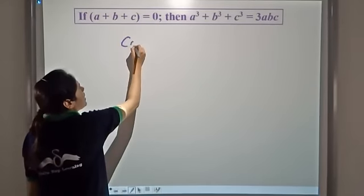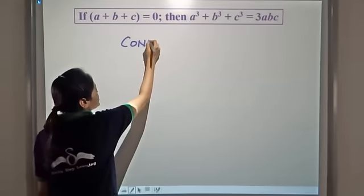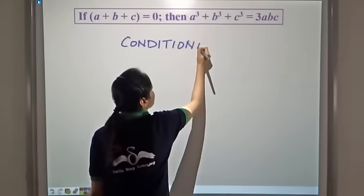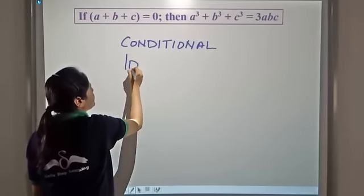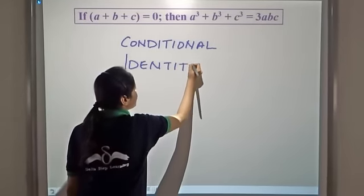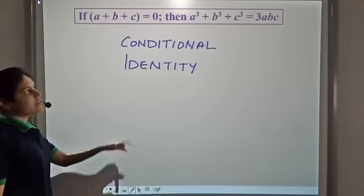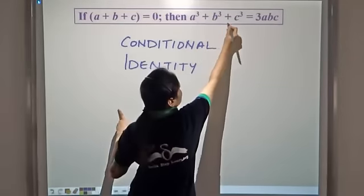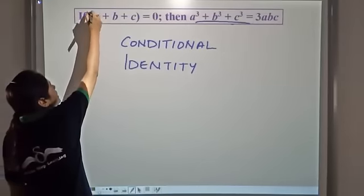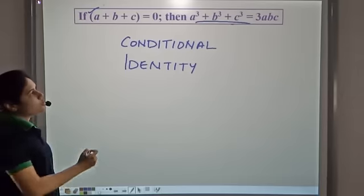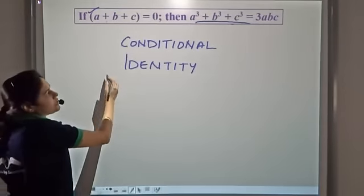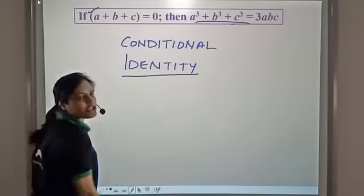This is a conditional identity. Why is it called a conditional identity? Because this holds only if this condition is true. Hence it is called a conditional identity.